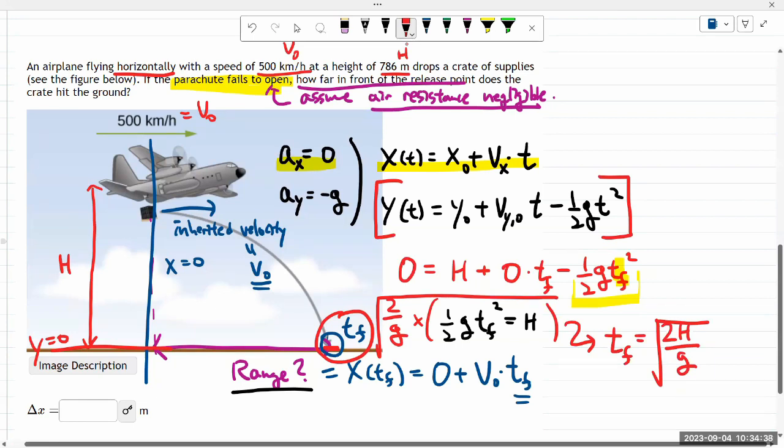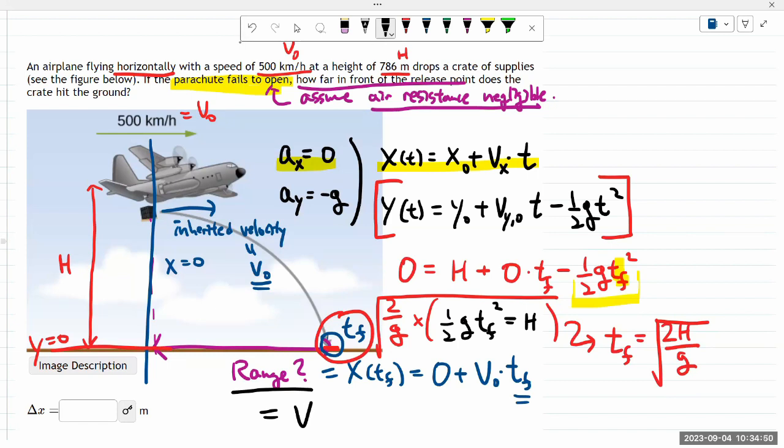Plug it in here. That'll get me the range. Let me write down the expression here. So the range will be, skipping zero, V-naught, for which I have a number, V-naught times square root of 2h over g.